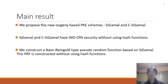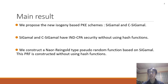Here are the main results of our study. We propose the new isogeny-based PKE schemes named SIGAMO and CCAMO. These schemes have IND-CPA security without using hash functions. Moreover, we constructed a Naor-Reingold-type pseudorandom function based on SIGAMO. This pseudorandom function is also constructed without using hash functions.